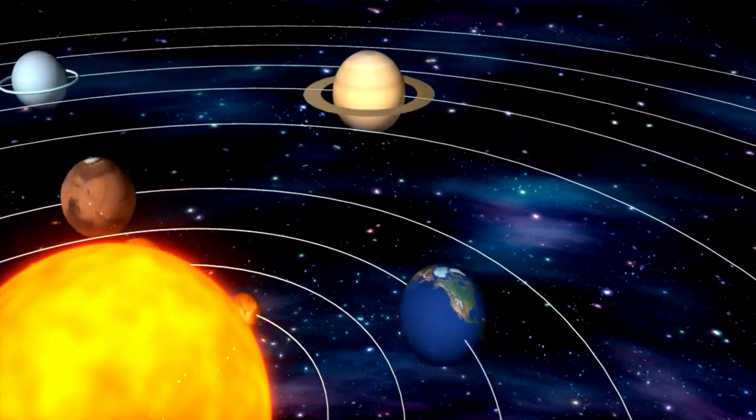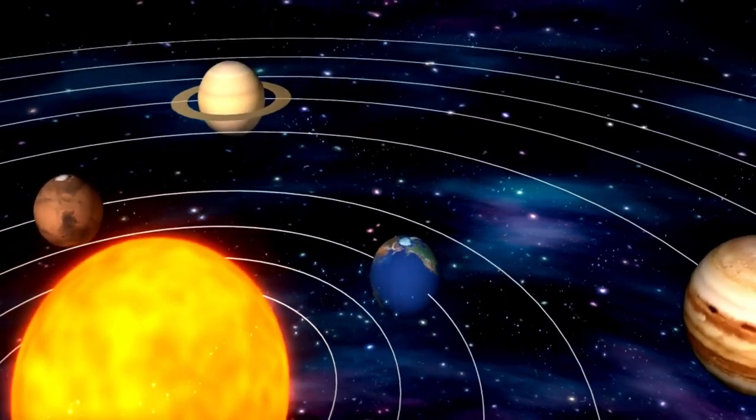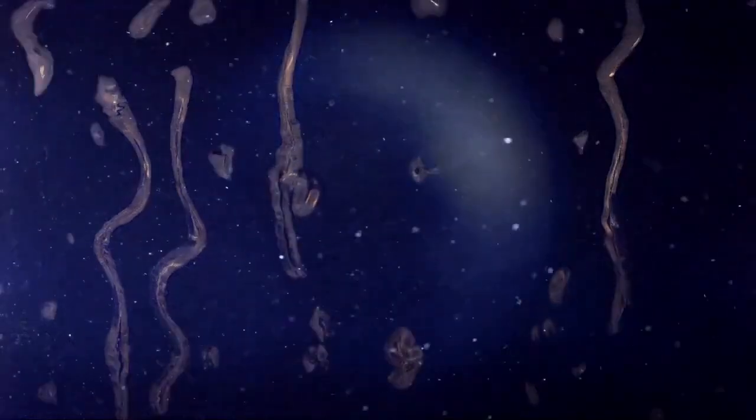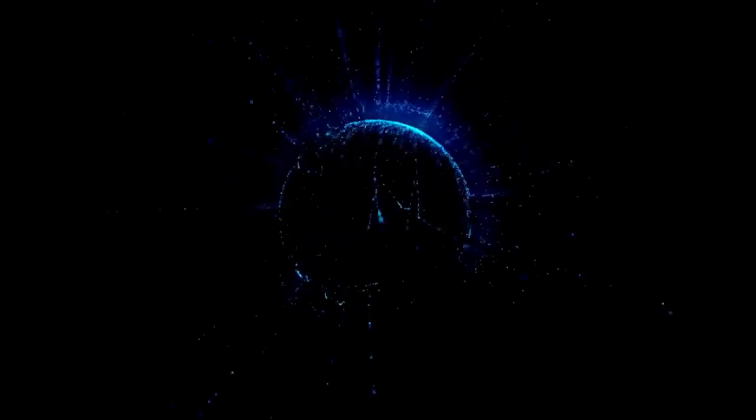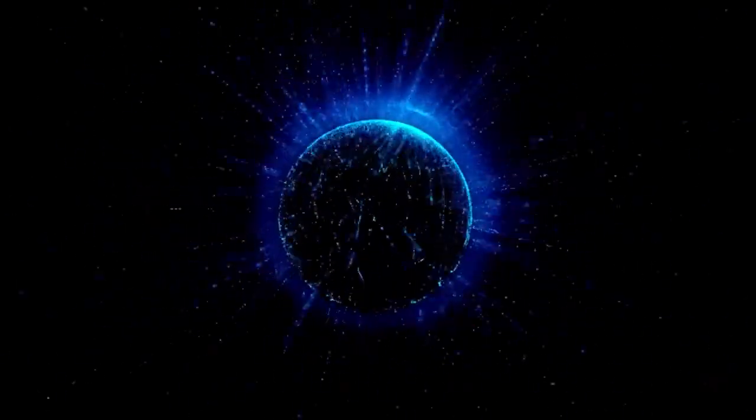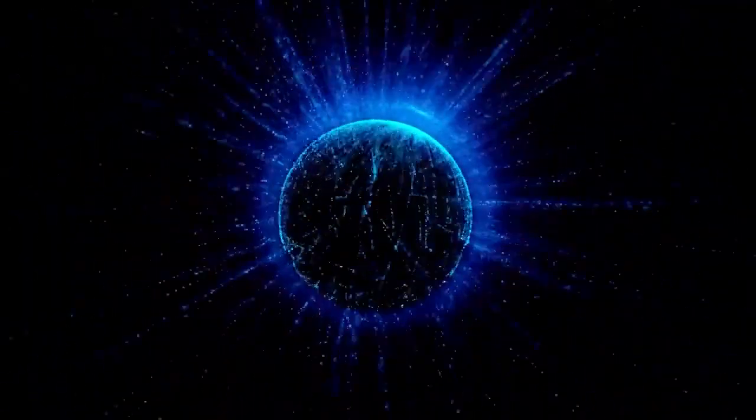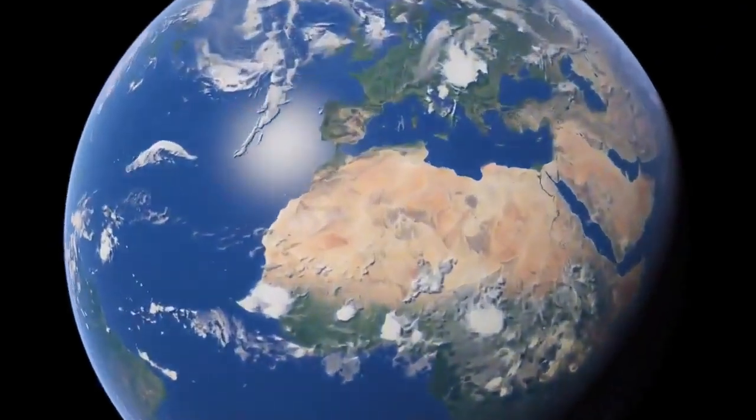This solar wind streams outward in all directions, carrying the Sun's magnetic field across vast distances. Eventually, the solar wind meets the interstellar medium, a region filled with remnants of ancient stellar explosions. Much like oil and water, the solar wind and the interstellar medium don't easily mix, creating a boundary called the heliosphere. This vast bubble, powered by the solar wind, extends roughly 11 billion miles from the Sun, encapsulating the Sun, all eight planets, and a significant portion of the solar system's outer regions.